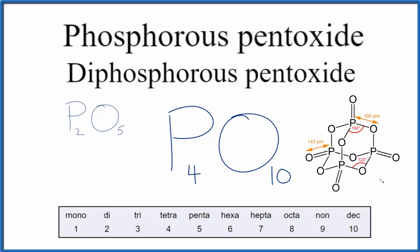So this is the formula for phosphorus pentoxide, also called diphosphorus pentoxide, and sometimes you'll see it called tetraphosphorus decoxide.